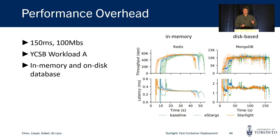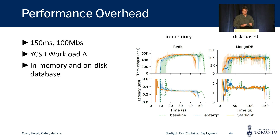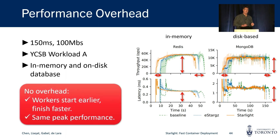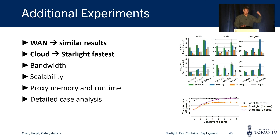We also measured overhead using YCSB to set up a workload with two million operations — a 50-50 read-write workload — using both in-memory and on-disk databases. We observed that Starlight workers start earlier than eStarGZ and container D workers, but also finish the work faster, and they reach the same peak performance as the baseline container D and eStarGZ workers. Please see our paper for additional experiments such as results on a wide area network, in the cloud, the effect of bandwidth, scalability, and so on.